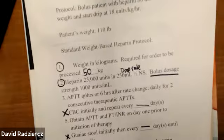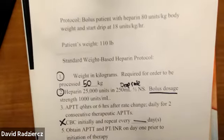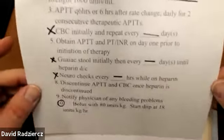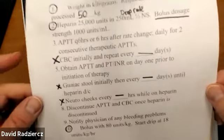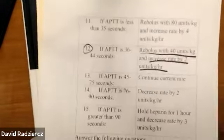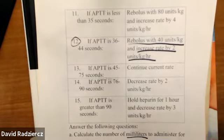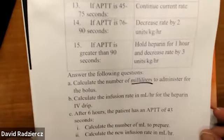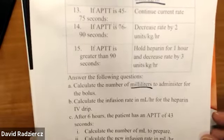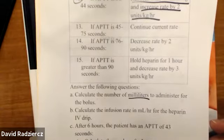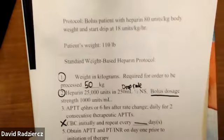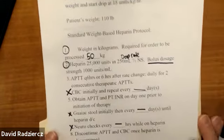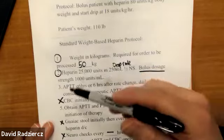Now the heparin protocol. You're going to get this protocol, and everything listed here — steps 1, 2, 10, 11 through 15 — are steps to the protocol, not questions to answer. The only questions to answer are A, B, C1, and C2. You do not need to worry about the CBC, the Guaiac stool, or neuro checks — this is a dosage calc test and you're just asked to do the math.